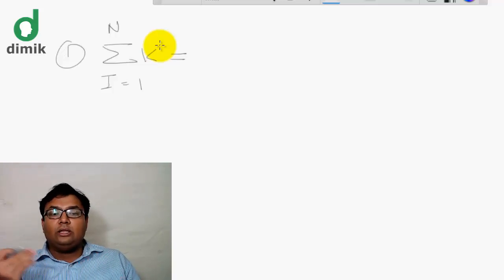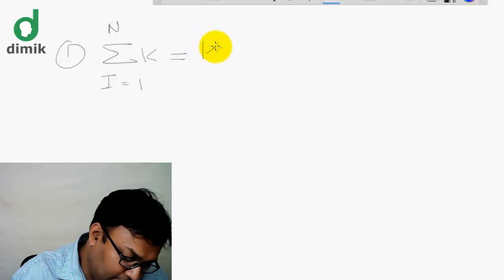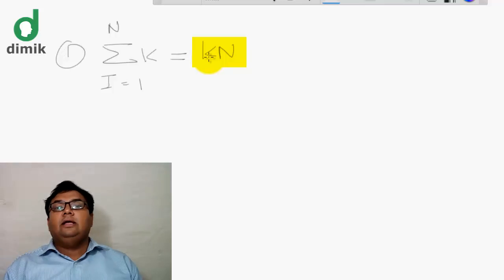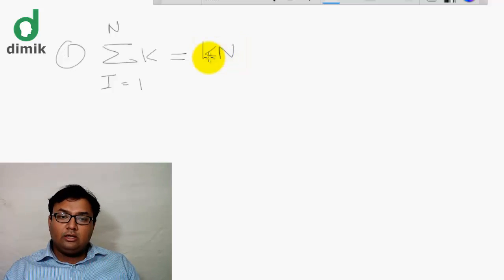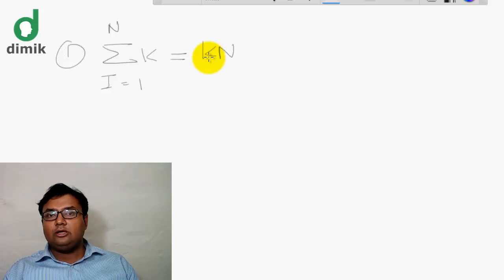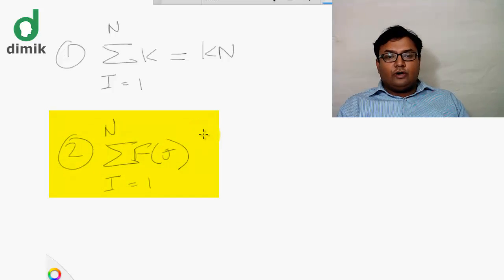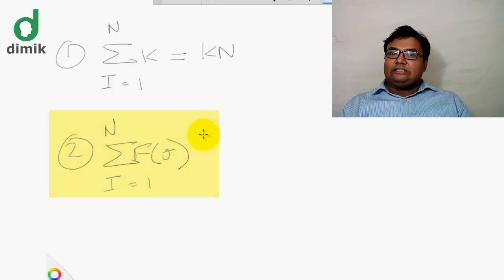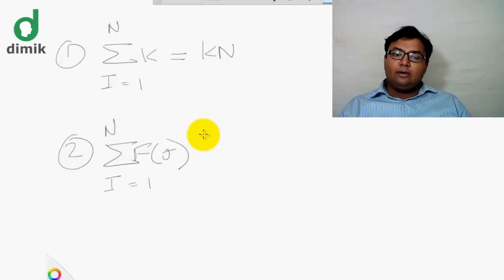We are going to show that k equals n times k — when the summation is of a constant, the result is the constant multiplied by the number of terms. The second property: the summation of i equals 1 to n of f of i plus g of i, where i is the index variable.